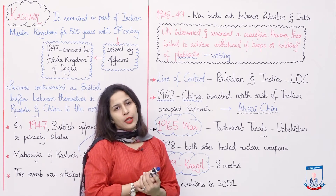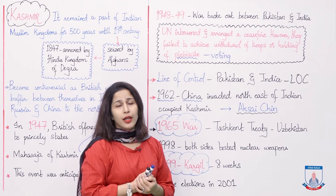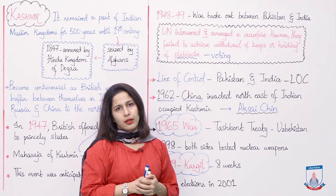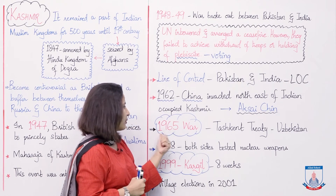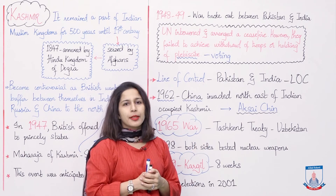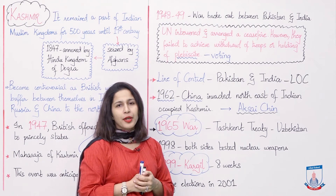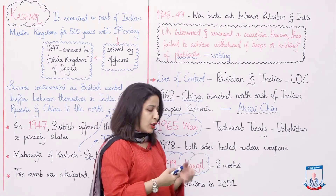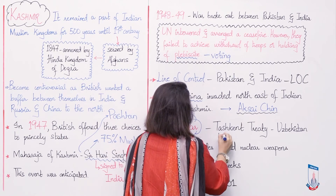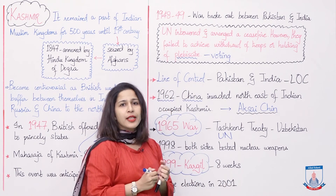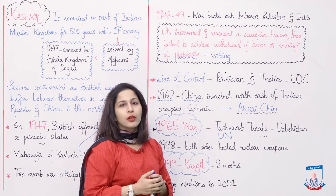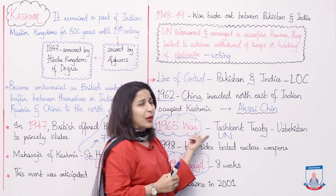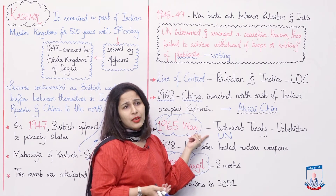Kashmir remained a conflict. In September 1965, a war broke out. As a result, the UN intervened again. The Tashkent Treaty was signed in Uzbekistan, under which Pakistan and India had their forces withdraw. However, the conflict was not settled, but the situation became a bit more stable.